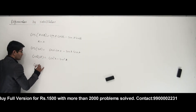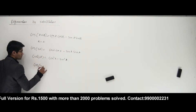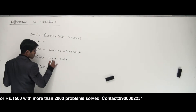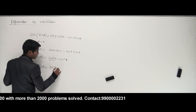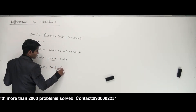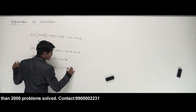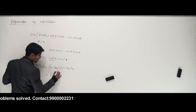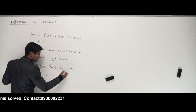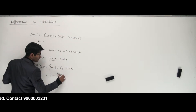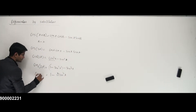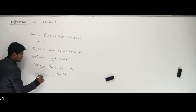Now cos 2a can also be written as: if I substitute for cos squared a, it goes like 1 minus sin squared a minus sin squared a. So what happens here? 1 minus 2 sin squared a. That is cos 2a. So this is one of the formulas we know.